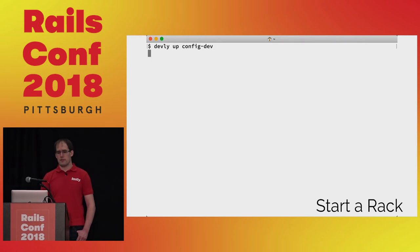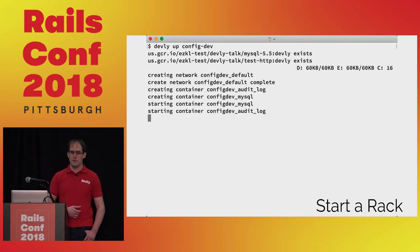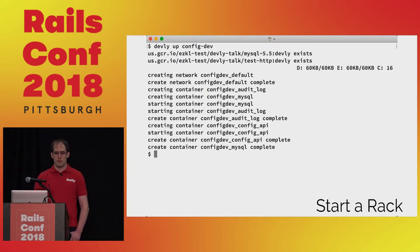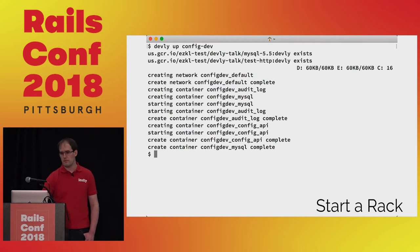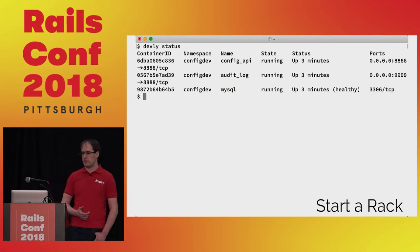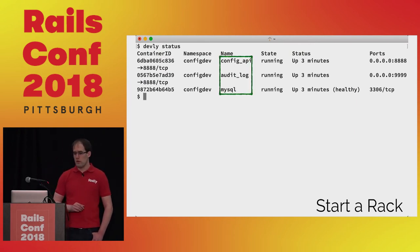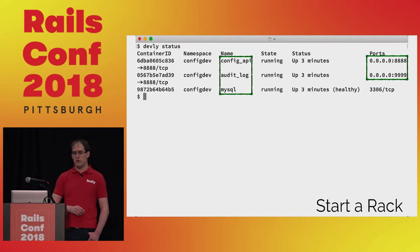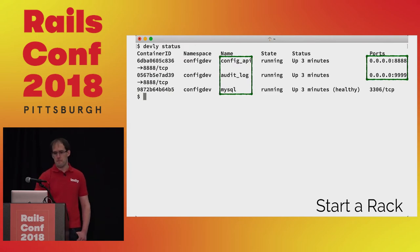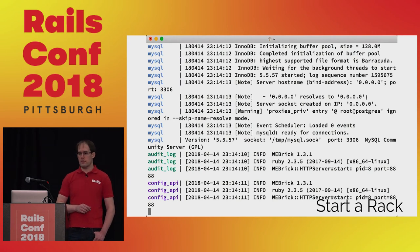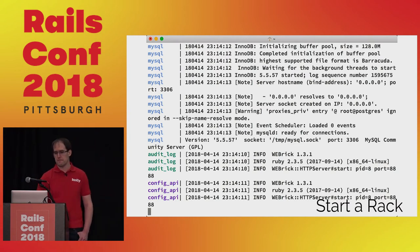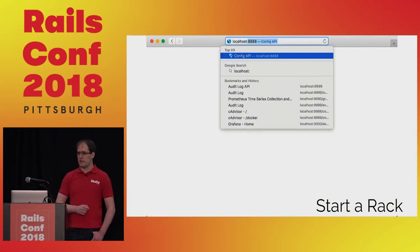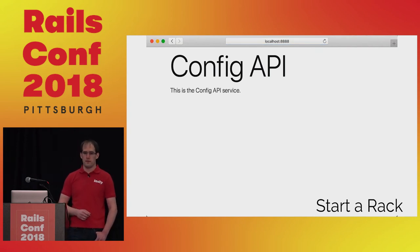The Devly up command starts a rack. Since we don't have all the necessary images downloaded from the registry, first we see Devly pulling one of those images. Once all images are downloaded, Devly creates a network to isolate this rack and starts all the containers. When containers aren't dependent upon each other, Devly can start them in parallel to speed up startup. We run Devly status to see which racks and services are currently running. We can see that the two API services and the database are running and accessible to the host OS on ports 8888 and 9999.